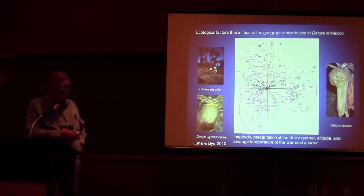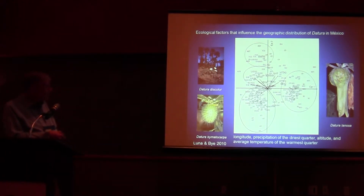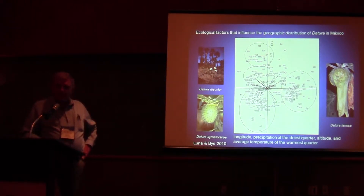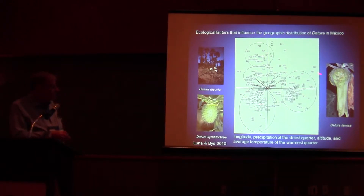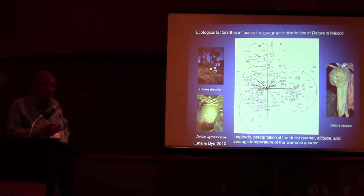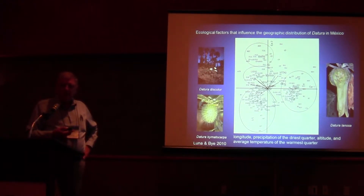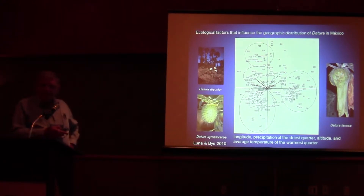Here we're looking at distribution related to 21 different environmental factors using an ecological niche model. What we find is that longitude, precipitation of the dry quarter of the year, altitude, and average temperature during the warmest quarter of the year best explain the distribution of these species throughout Mexico. This in part may explain why not all Datura species are weedy — Datura stramonium is the weediest species, found throughout all biogeographical provinces, but the endemic species are not.